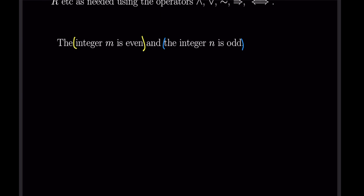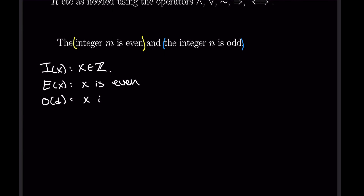Let's define things in terms of open sentences. Let I(x) be the statement 'x is an integer,' and let E(x) be the statement 'x is even.' For oddness, O(x) — 'x is odd' — is actually just NOT E(x), taking advantage of the fact that every integer is either even or odd. So if something is not even, then it is odd.